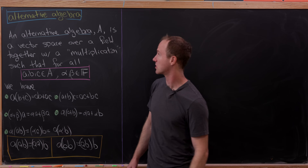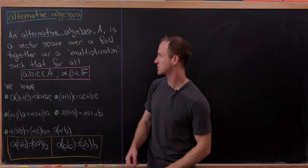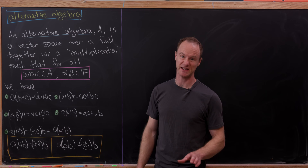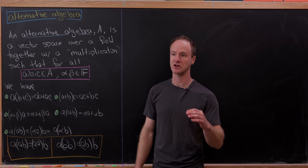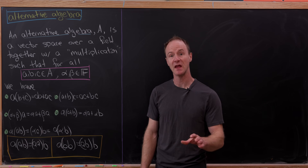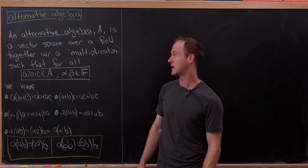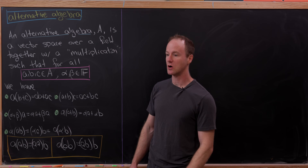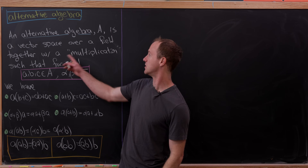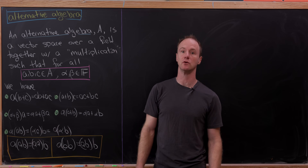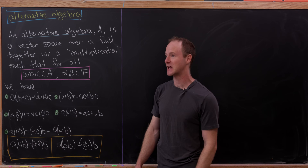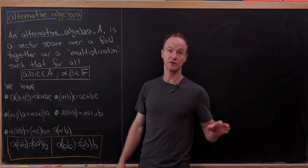An alternative algebra A is a vector space over a field. You almost always want to start with this kind of setup — for an associative algebra, also for a Lie algebra, you start with a vector space over a field, and for an alternative algebra you do as well. Not only do you have a vector space over a field, but you've got a multiplication rule for vectors in this vector space, and it's got to satisfy some rules.